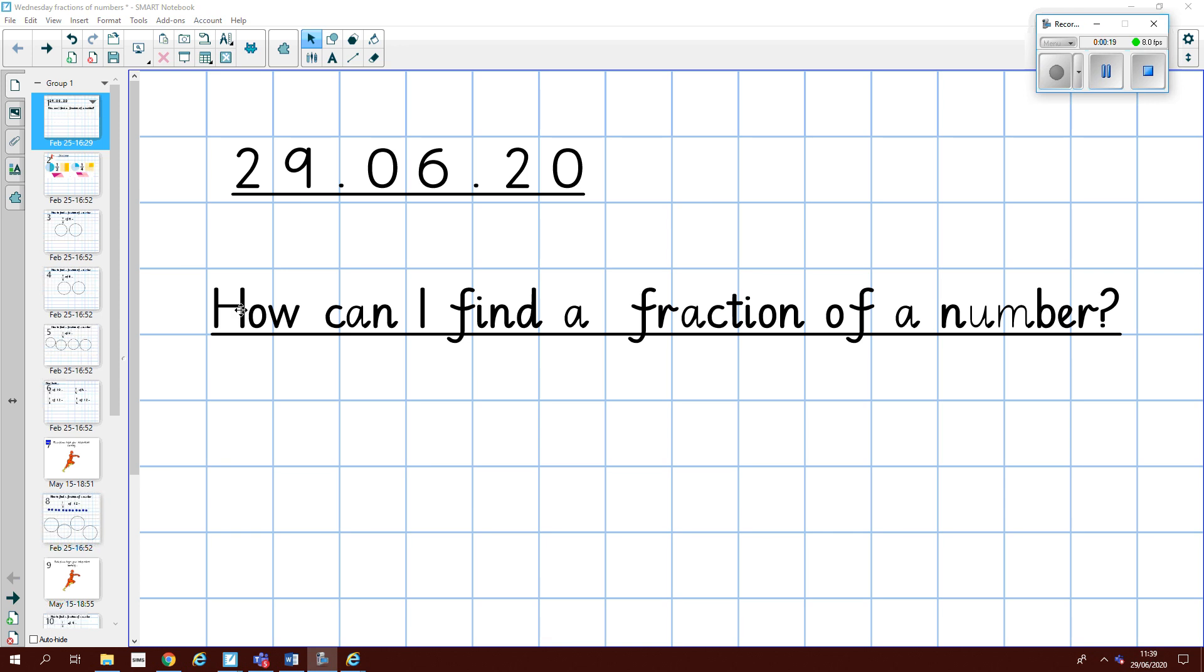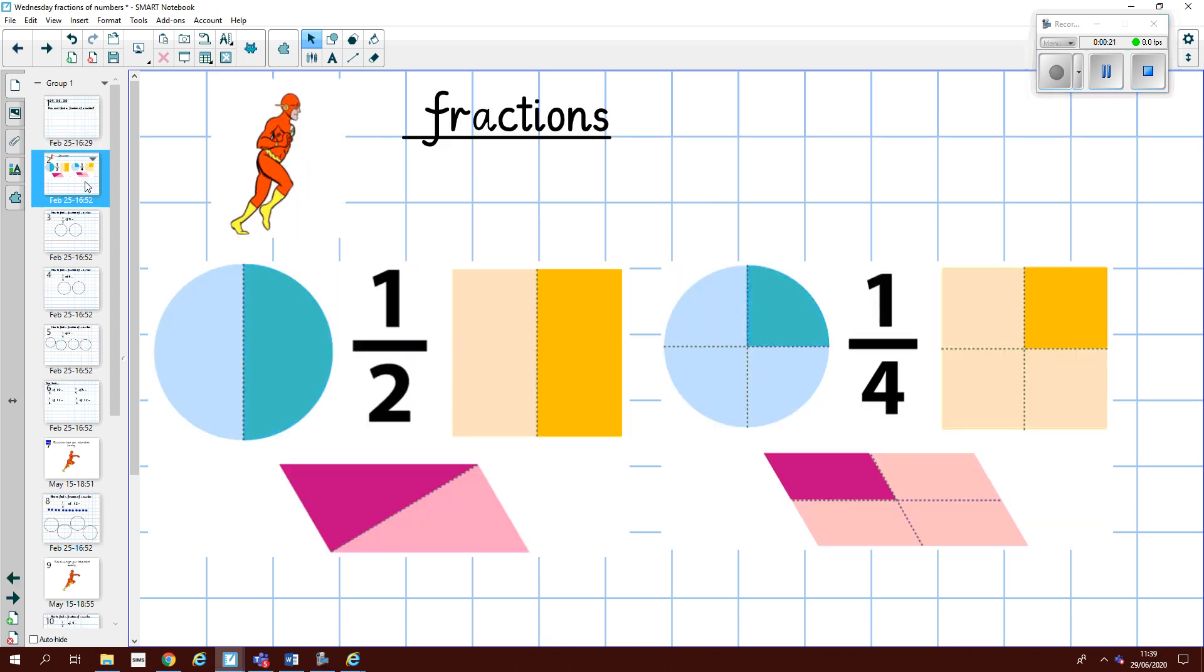I'm going to start by recapping on these fractions here. So we've got one half and one quarter. Let's see if you can say those: one half and one quarter. As you can see here, this fraction half, we have two equal parts. And for one quarter, we have four equal parts.